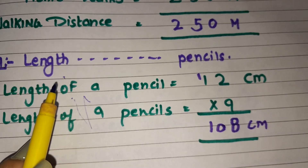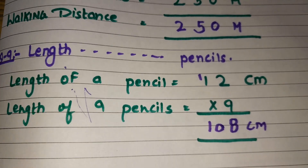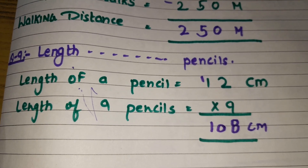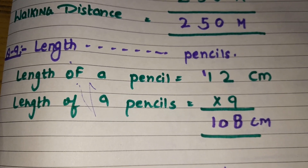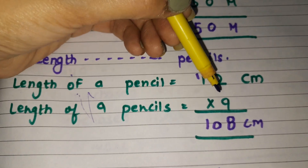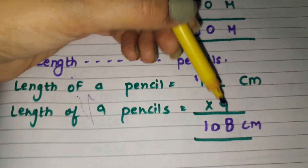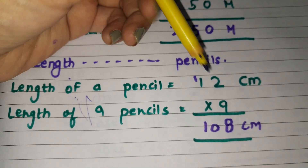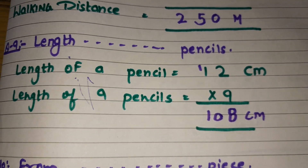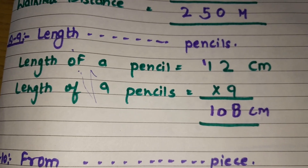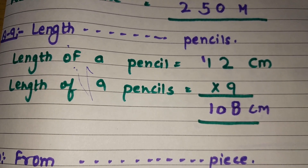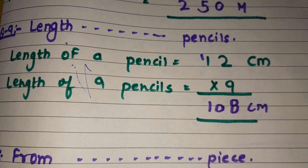Answer: length of a pencil is 12 centimeters. Length of 9 pencils — multiply it. 9 times 2 is 18, write 8 and carry 1. 9 ones are 9 plus 1 carry is 10. So total length of 9 pencils will be 108 centimeters.